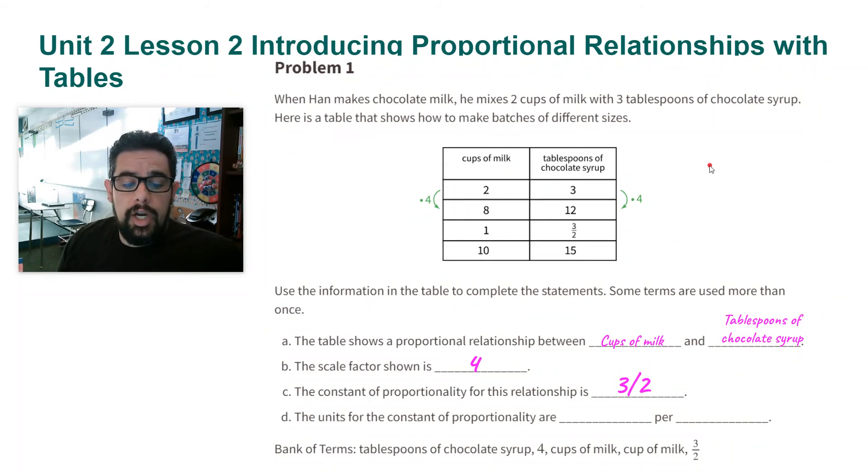Part D, the units for the constant of proportionality are blank per blank. So here, again, we're looking at what our table represents. And it is the number of tablespoons of chocolate syrup per cups of milk. So now we're just relating these two things, the syrup and the milk.